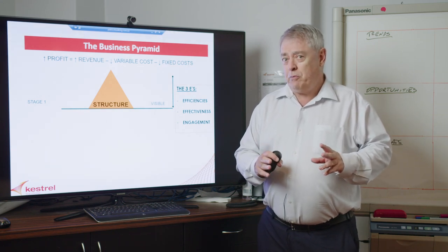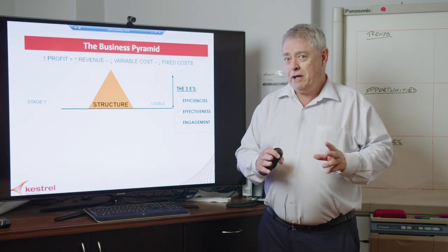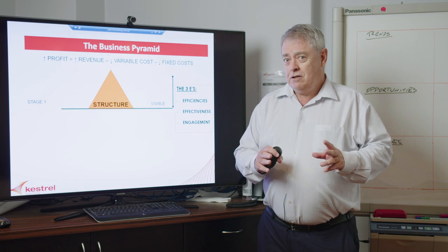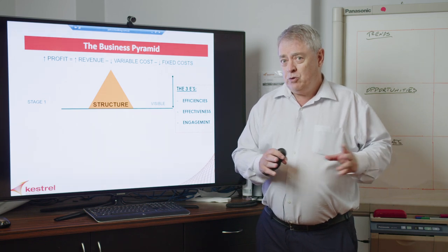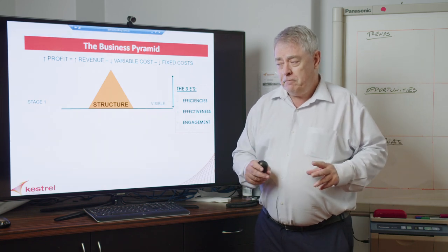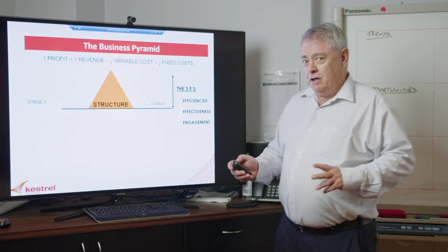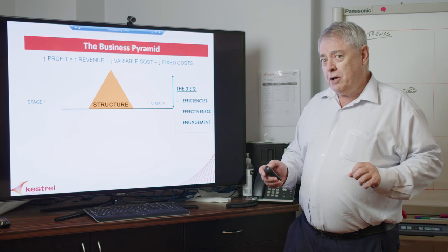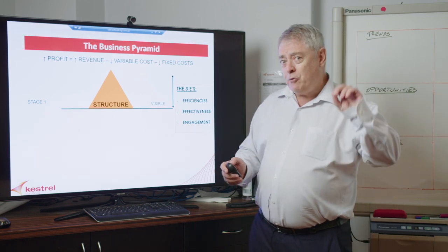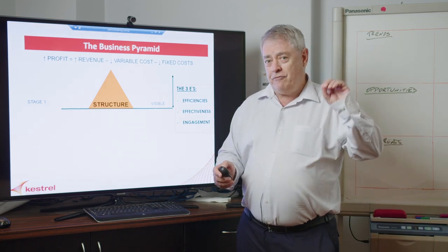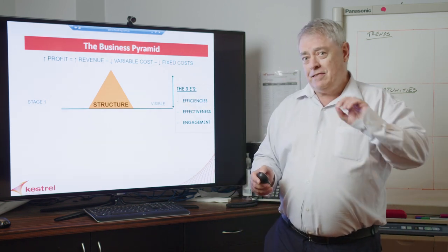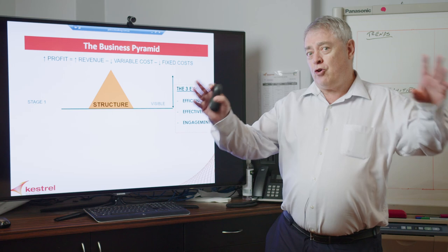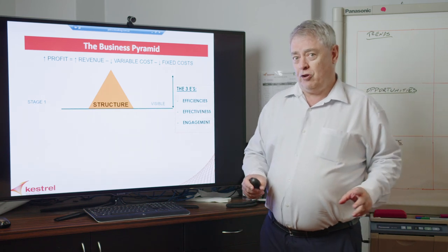If you're using a piece of equipment once every three months, do you really need to own that equipment, or do you hire it in? Those things don't appear — there is no line in your profit and loss saying 'efficiency,' and there's no other expense. They just appear across the whole profit and loss statement.